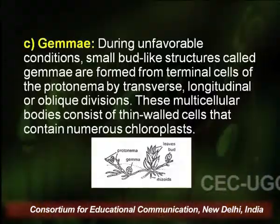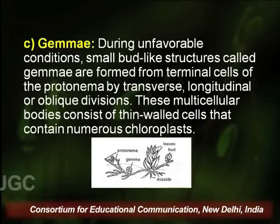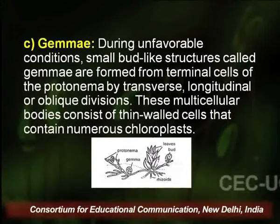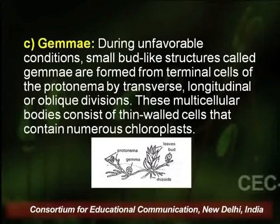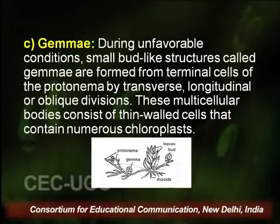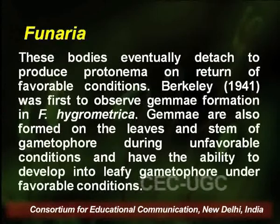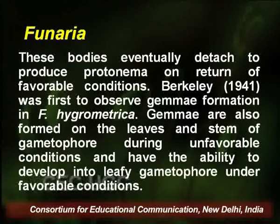There are also reported cases of gemmae in Funaria. During favorable conditions, small bud-like structures called gemmae are formed from terminal cells of the protonema by transverse, longitudinal, or oblique divisions. These multicellular bodies consist of thin-walled cells containing numerous chloroplasts, and eventually detach to produce protonema upon the return of favorable conditions.